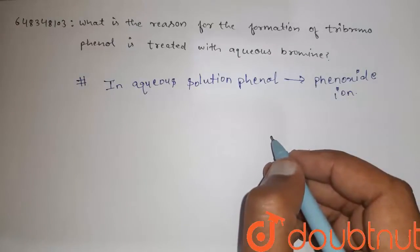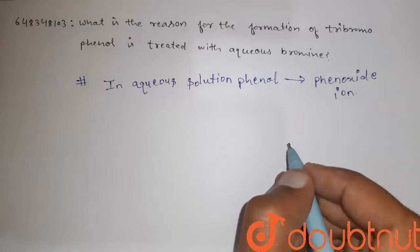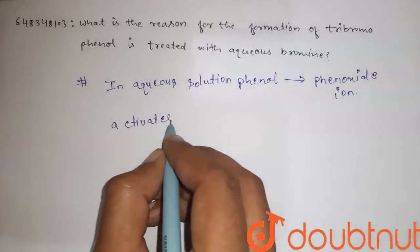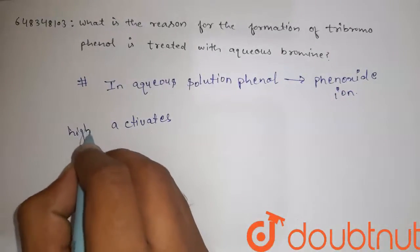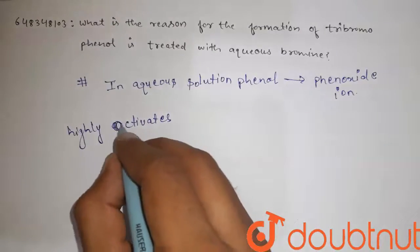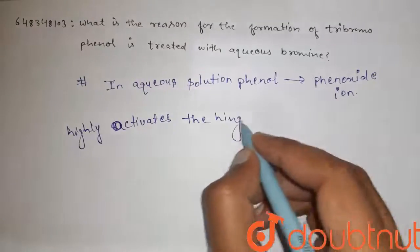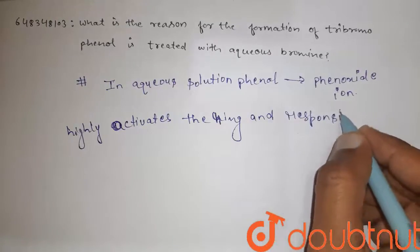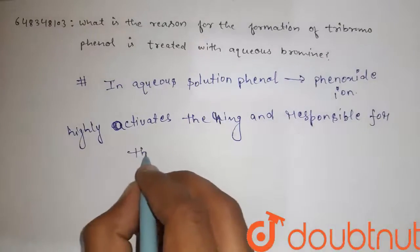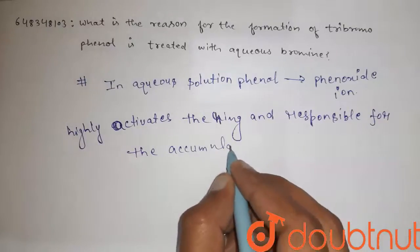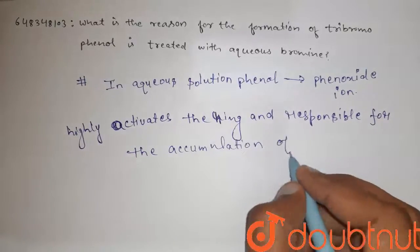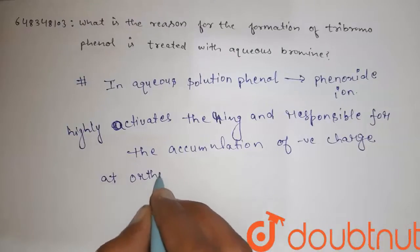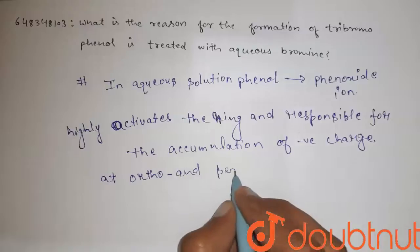The phenoxide ion highly activates the ring and is responsible for accumulation of negative charge at ortho and para positions.